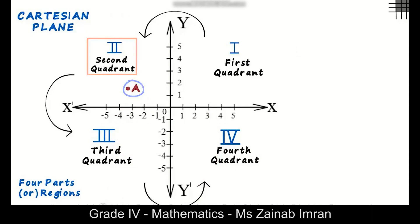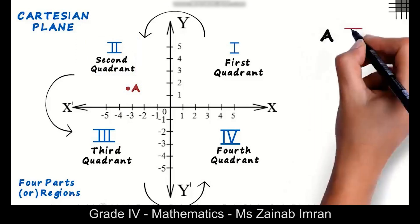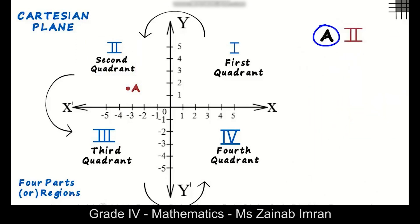This point lies in the second quadrant, so we write A II here. Point A lies in the second quadrant. Let's assume I mark point B here. This point is in the first quadrant. We write B first here.